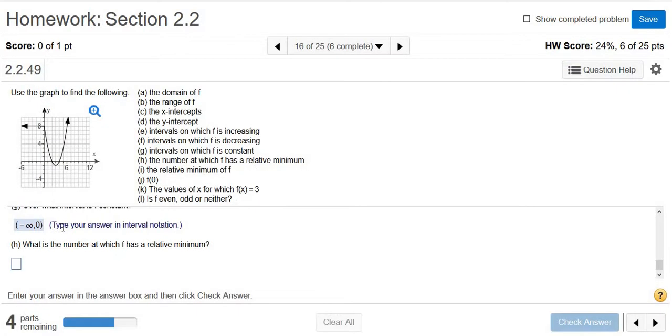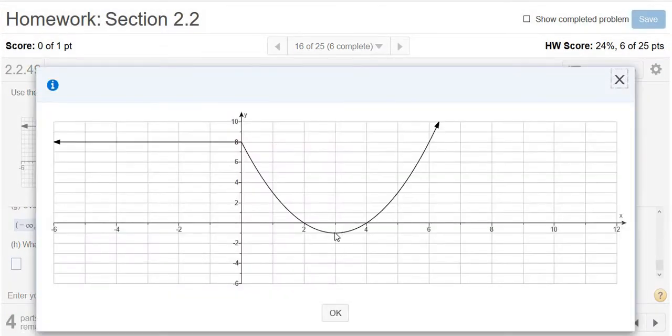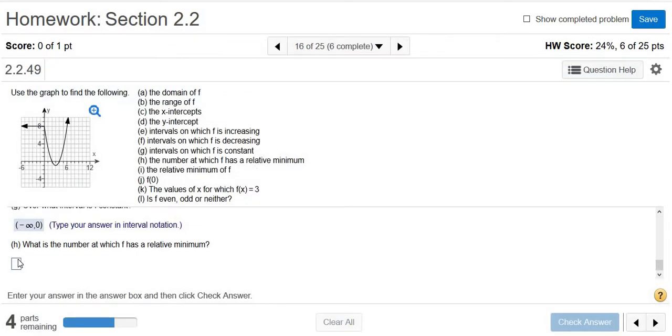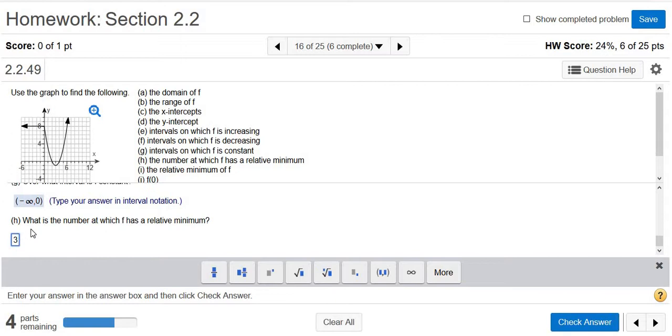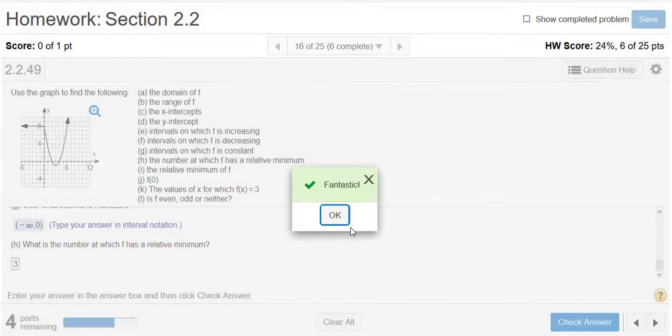The question didn't want that though. The question said, what is the number at which f has a relative minimum? The minimum is the smallest y-value, so it's negative 1 here. That occurs or happens at x equals 3. So at x equals 3, the function has a relative minimum. The answer is x equals 3. It's asking where it happens. Whenever you're talking about what happens to a function, you always reply with x-values.